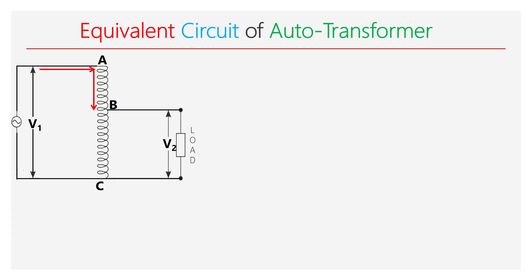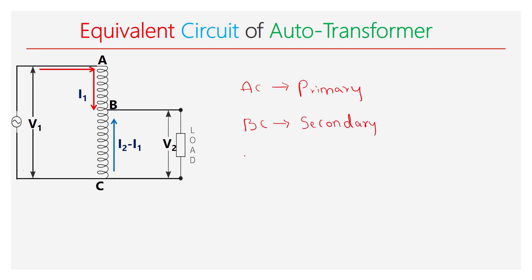In an autotransformer, a part of the winding is common for both primary and secondary. In this figure, the section BC is common for both primary and secondary winding. When the winding AC is excited with the alternating supply, a current I1 flows from A to C. As per the working principle of the autotransformer, there exists a transformer action between the winding AB and BC. The difference of current I2 minus I1 flows through the load from C to B. The winding AC acts as a primary and the winding BC acts as a secondary winding. The MMF produced by the section AB is equal to the MMF produced by the section BC.